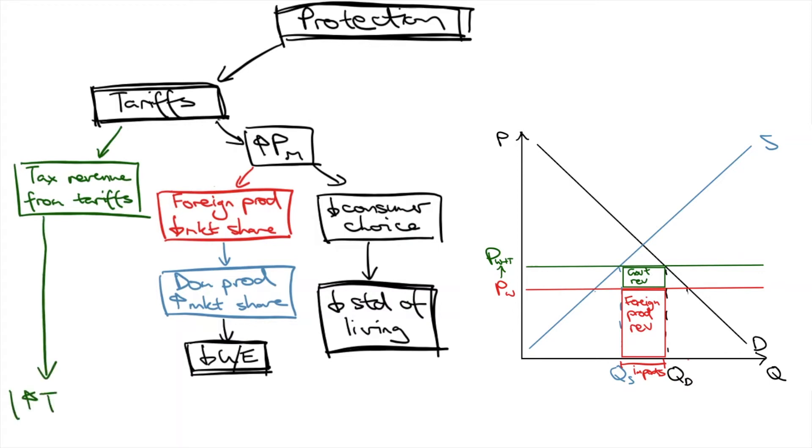Furthermore, by boosting the market share and revenue of domestic producers, the government could receive more company tax. Increased domestic employment would also mean greater incomes and consumption, leading to greater income tax and GST receipts. This wouldn't be seen in the market diagram.